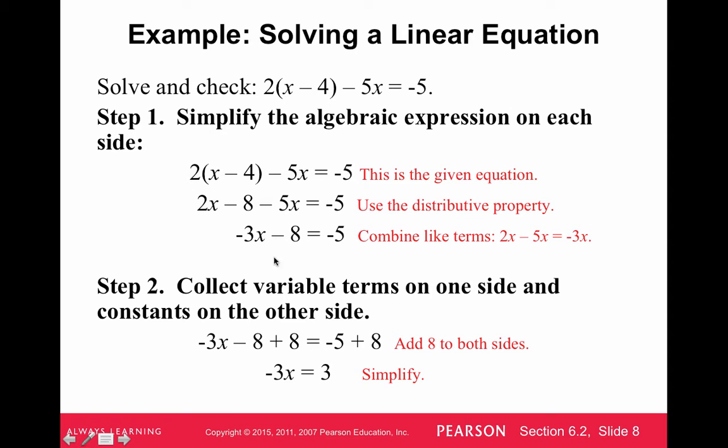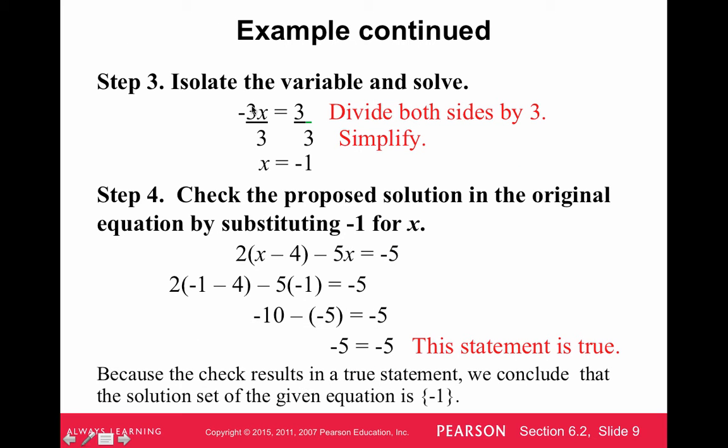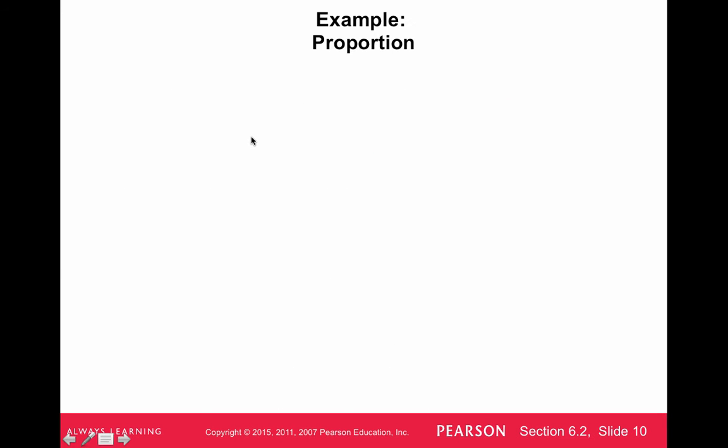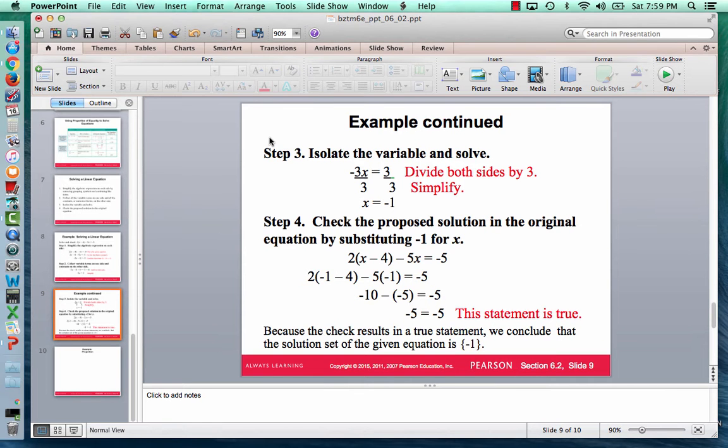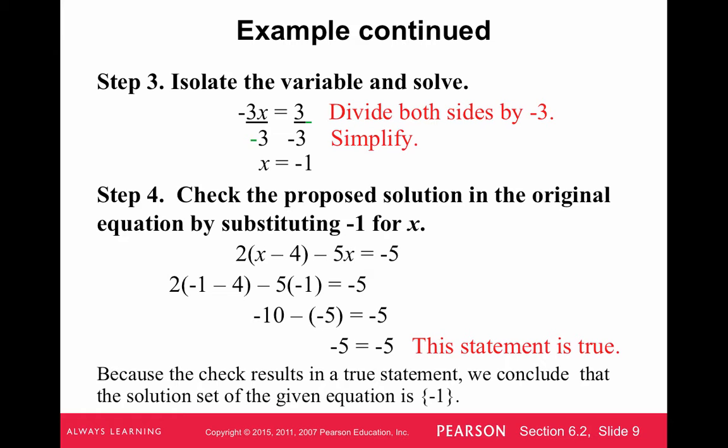The next step would be to add 8 to both sides. At this point, we're trying to isolate the variable. We add 8 to both sides and negative 5 plus 8 is 3. Adding the 8 here gets rid of the minus 8, so we have negative 3x equals 3. Then we isolate the variable by dividing by, we should be dividing by negative 3. It should be showing divide by negative 3 here. Let me fix that in the lecture. Okay, we got that fixed.